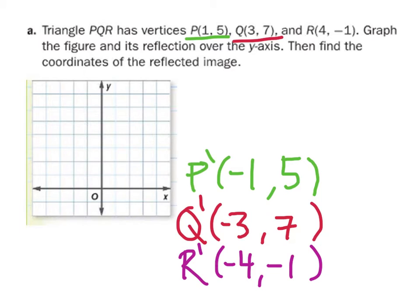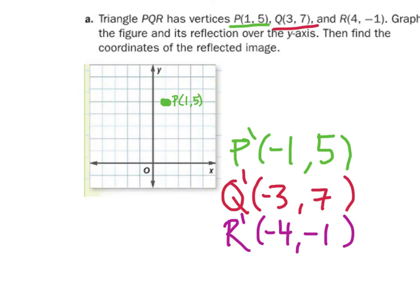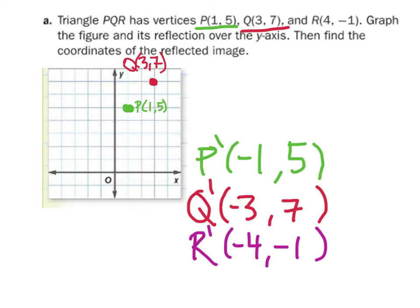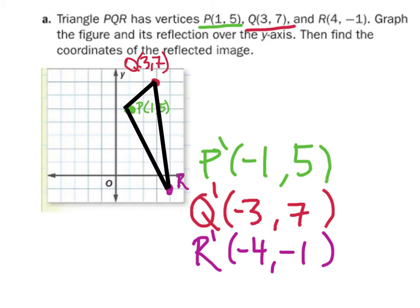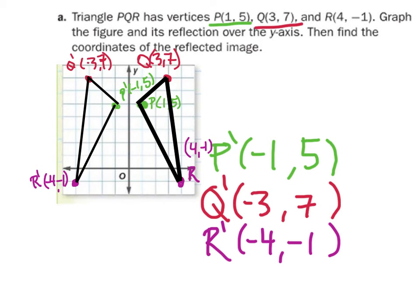Let's go ahead and graph both sets of points. Starting with P at (1, 5), Q at (3, 7), and R at (4, negative 1) — I'll connect those points to make the triangle. Then I'll graph the second set of points and put those lines in to make our reflected triangles. We've labeled them as the image points: R prime, P prime, and Q prime. And you can see the reflection over the y-axis.